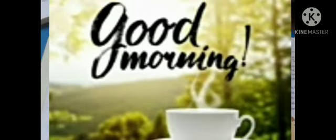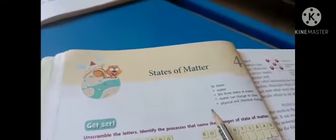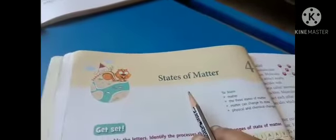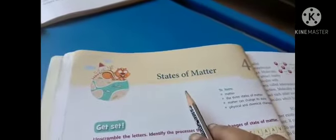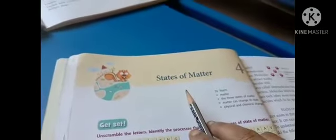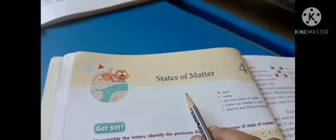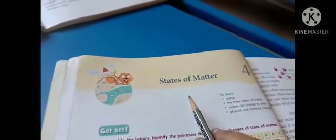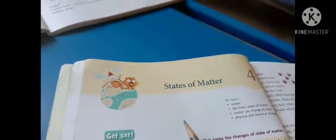Hi children, how are you all? Today the next lesson is the fourth lesson. The name is the States of Matter. Already in the previous class we all learned about what is matter, how many states are there. Today we have discussed previous basics.